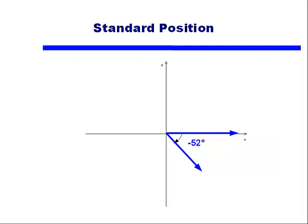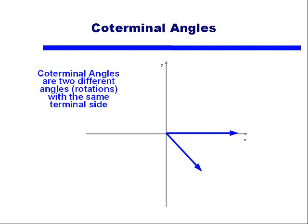For instance, an angle that looks to be about negative 52 degrees — if we take away the arcs showing which way we've rotated, it's hard to tell whether this is a negative angle or a large positive angle. This is when we start talking about coterminal angles. Coterminal angles are two different angles, or two different rotations, that have the same terminal side.